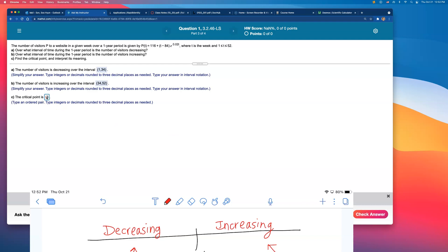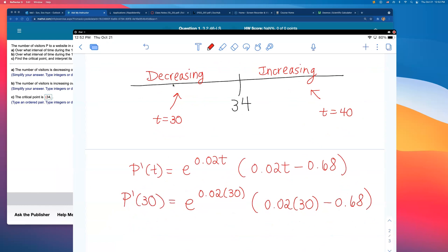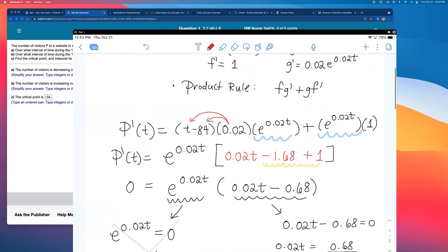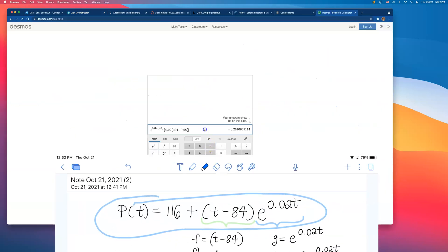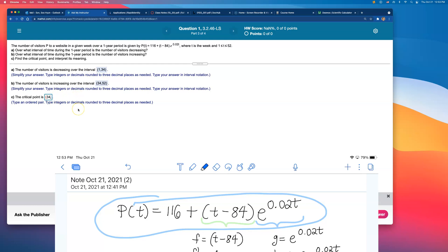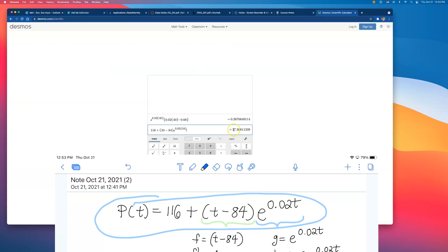The critical point is 34 comma, I don't know, what is the y value? I need to figure, because they want the critical point, that means we now need to plug in this 34 into the function, the original function. We need to plug in 34 here. So I'll do that using my calculator. I'll say it is 116 plus 34 minus 84 times e raised to the 0.02 times 34. It came out to be 17.3. They said round to three decimal places. So I'll go ahead and say 17.306.